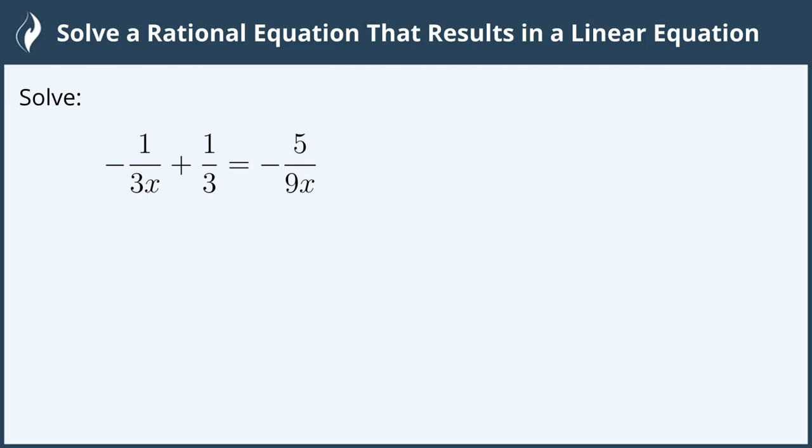Hi everyone! In this video we will solve a rational equation that results in a linear equation. Solve negative 1 over 3x plus 1 third equals negative 5 over 9x.